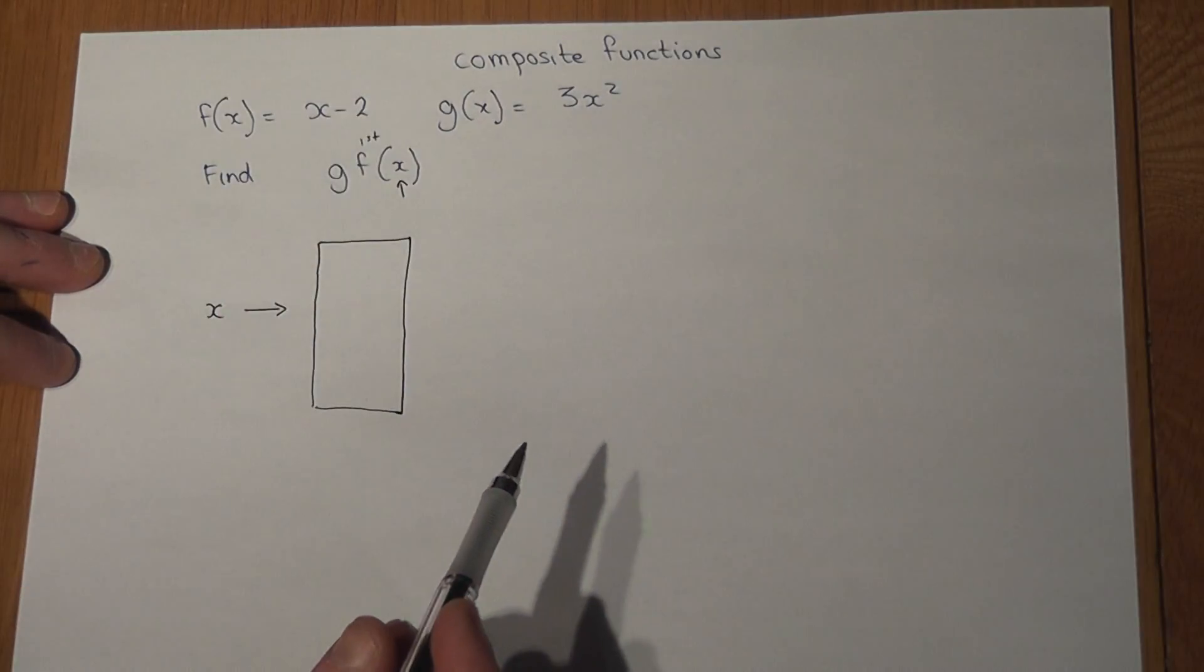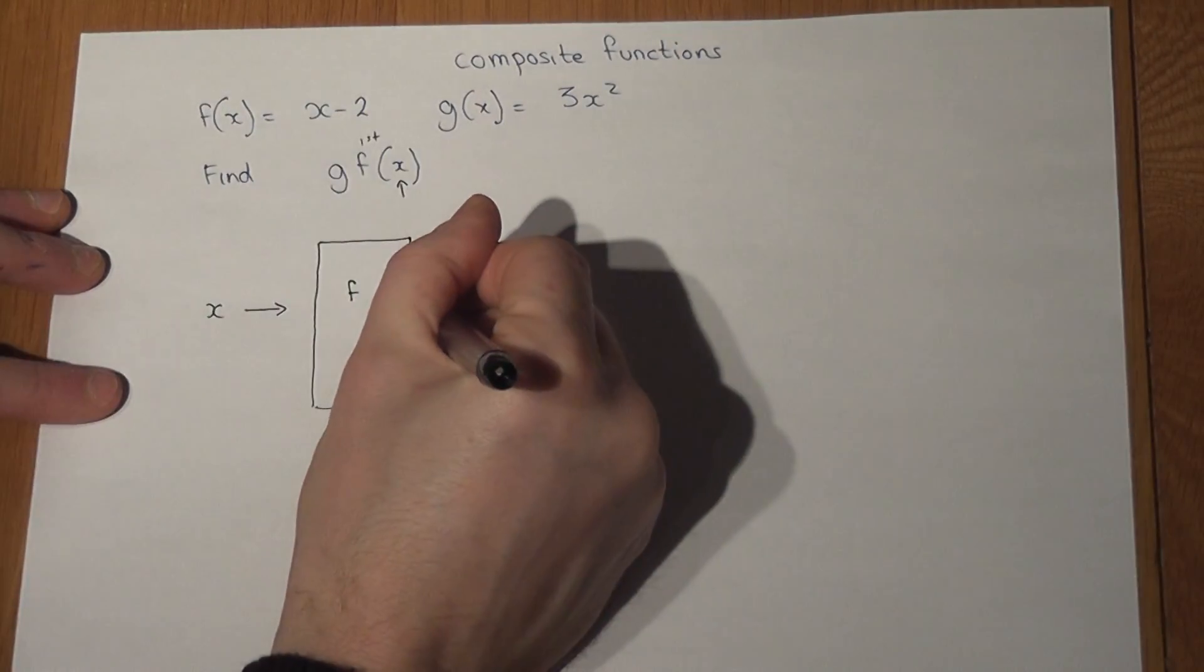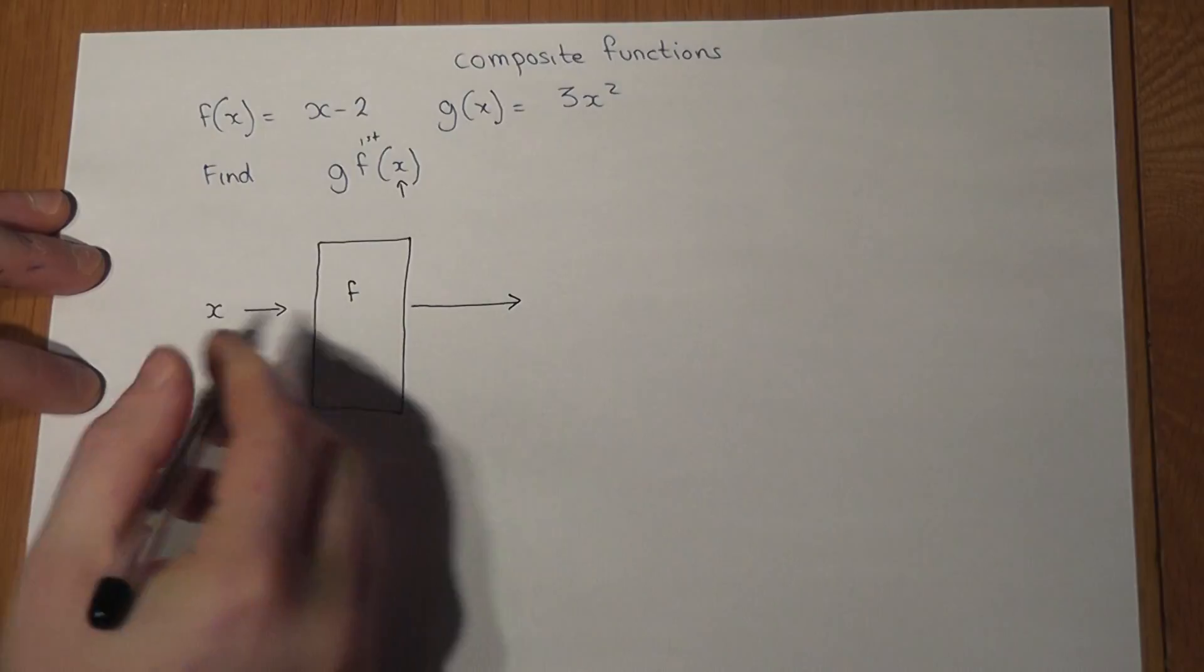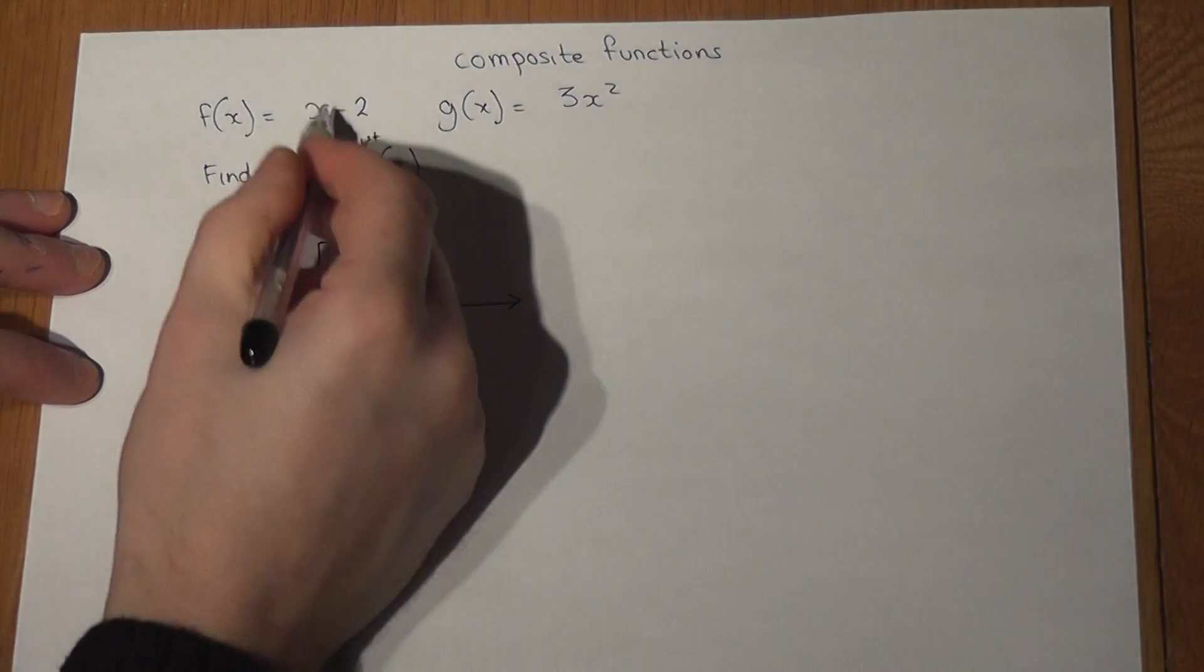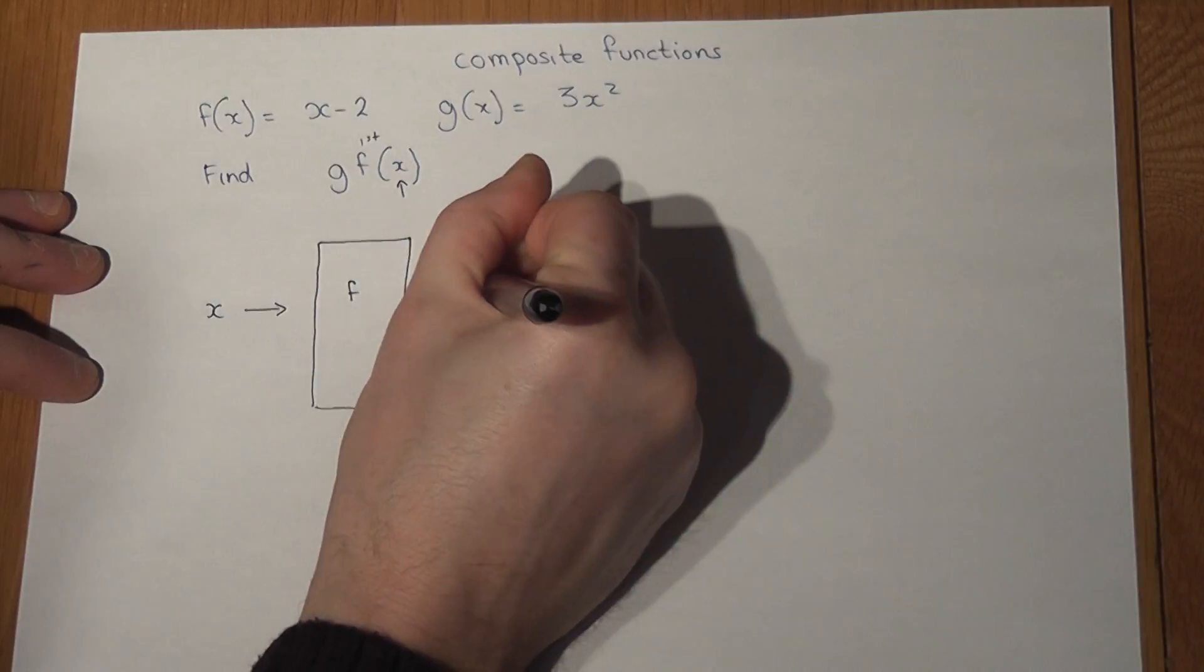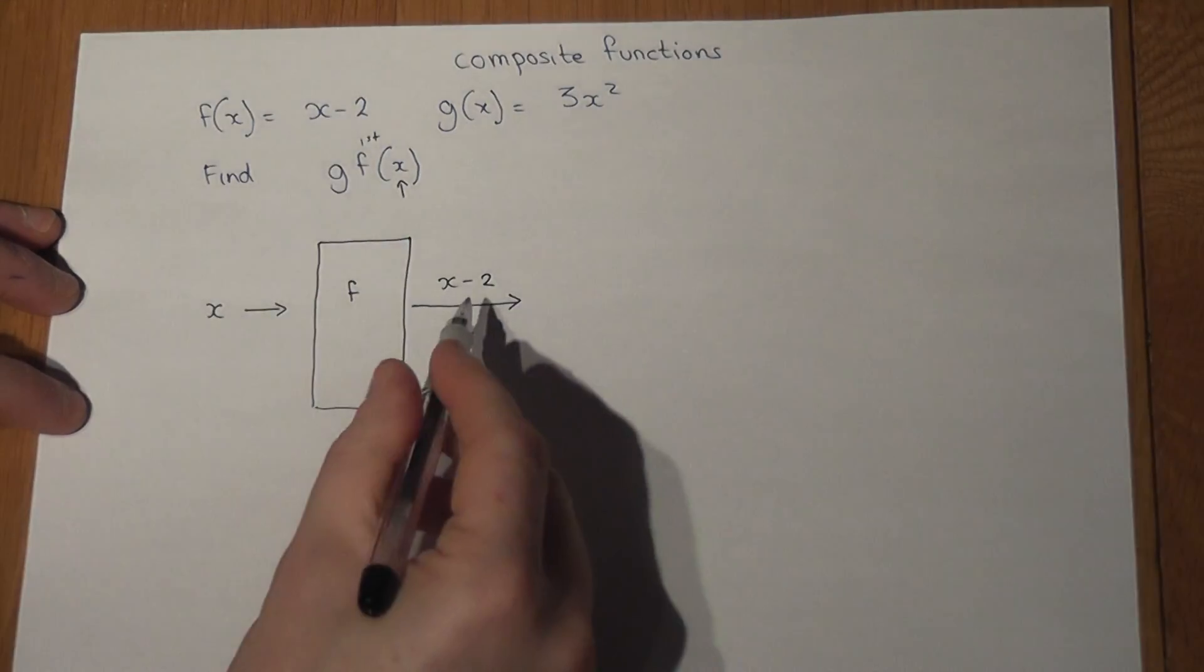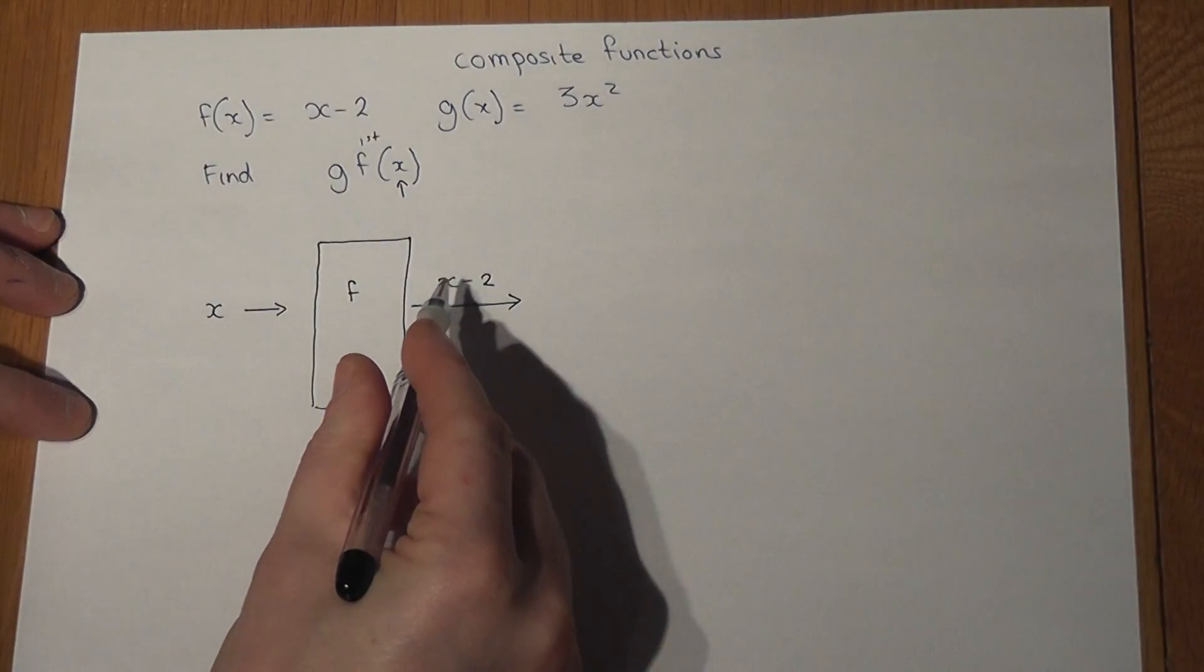take away two. So whatever the input is, we take away two. My input is x, so the output isn't x - the output is x take away two. This becomes my new input which is then put into the